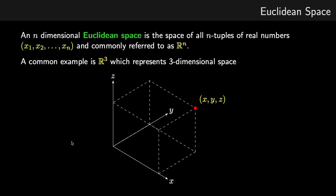In this video, we're going to talk about vectors, but before we introduce vectors, I'm just going to talk about Euclidean space. An n-dimensional Euclidean space is a space of all n-tuples of real numbers, and is commonly referred to as big R to the n.